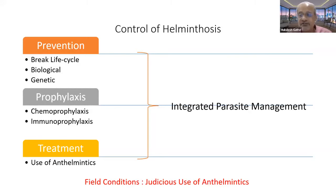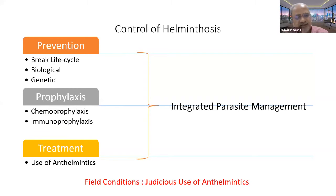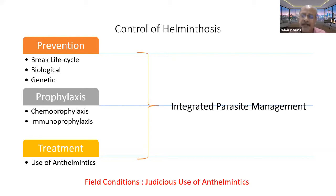There are certain natural enemies of the free-living stages which can be used for biological control, like nematophagous fungi. Genetic control is also possible. In prophylaxis, chemoprophylaxis by using anthelmintics should be used very scientifically, strategically, and judiciously. Immunoprophylaxis — developing a vaccine — is not feasible in India. In treatment, when you treat animals using anthelmintics, you are cutting down the source of infection for other animals. Use anthelmintics very thoughtfully by considering different aspects.